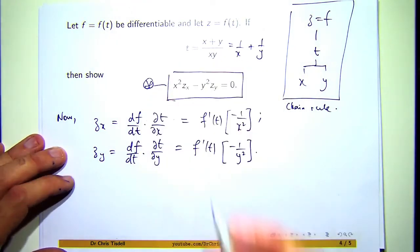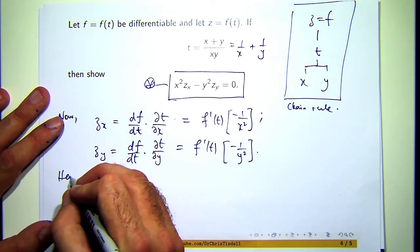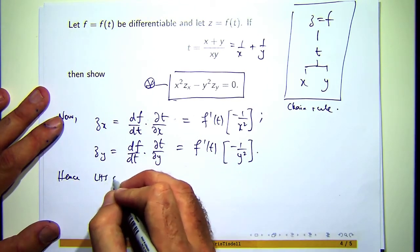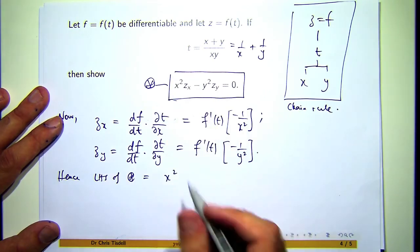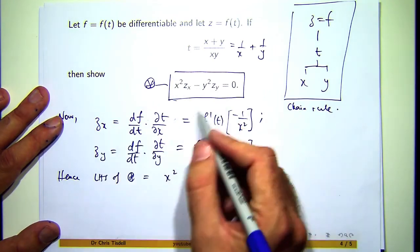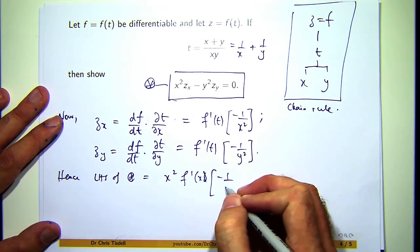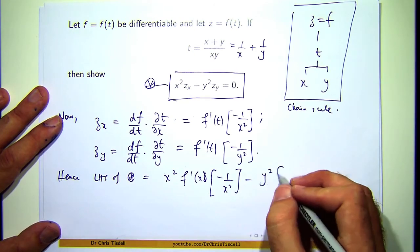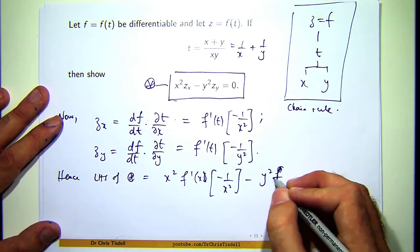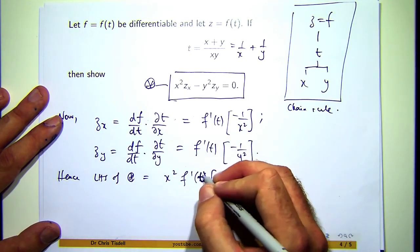All right, so let's see what our PDE is doing. Left-hand side of star: x squared times z sub x, which is all of this, minus y squared times all of this. Oops, that should be a t there, sorry—f dash of t.